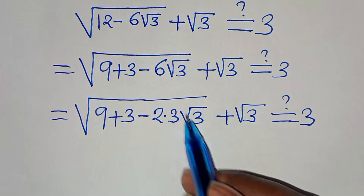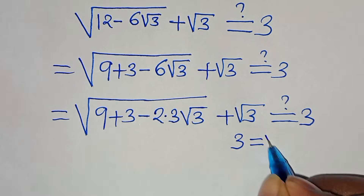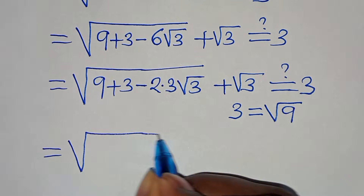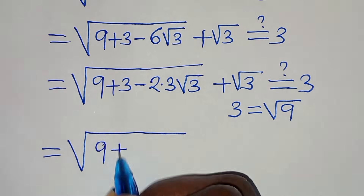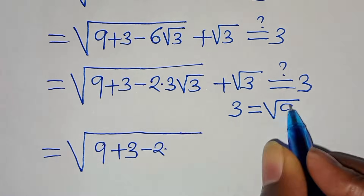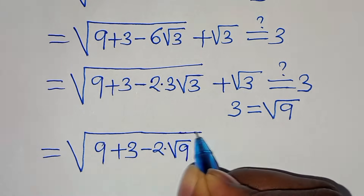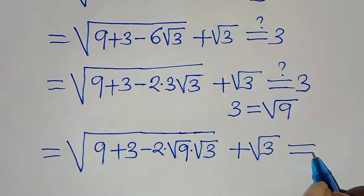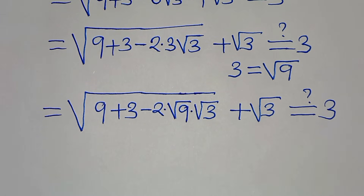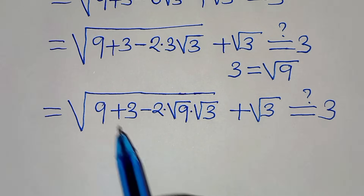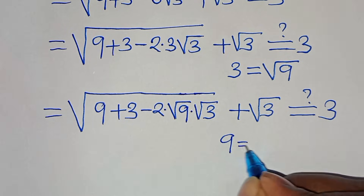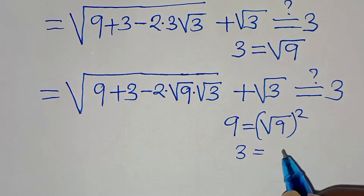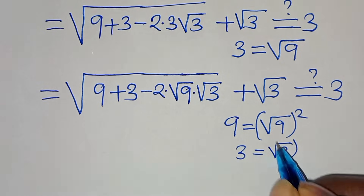Now, we can express 3 as the square root of 9. This means 9 is (square root of 9) squared, and 3 is (square root of 3) squared. So inside the outer square root we have (square root of 9) squared plus (square root of 3) squared minus 2 times square root of 9 times square root of 3, plus square root of 3, and this should give us 3.